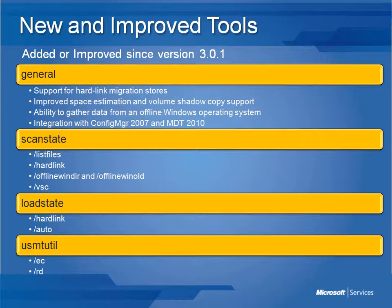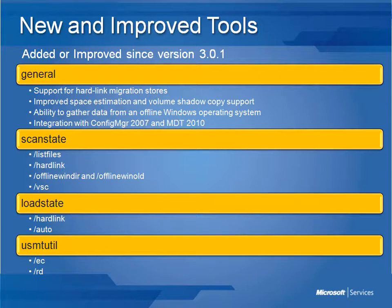To make use of these new features, additional command line switches were developed. In ScanState, /listfiles enables you to generate a text file listing all files included in a migration, while /hardlink enables creation of a hardlink migration store at a specific location. The /offlinewindows and /offlinewinold switches allow you to specify the offline Windows directory where ScanState will gather user state. The /vsc switch enables use of the Volume Shadow Copy service to migrate files that are locked or in use.